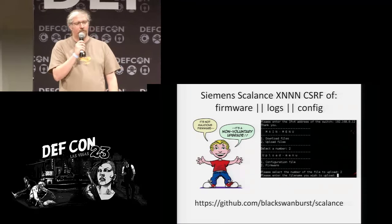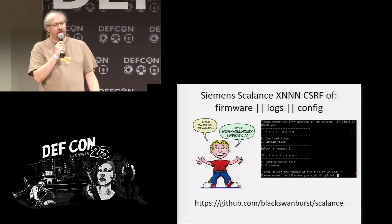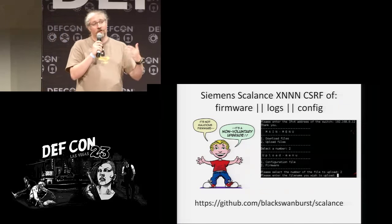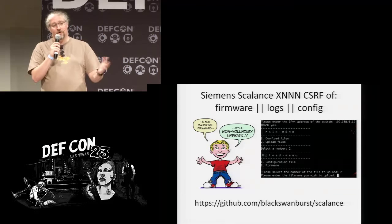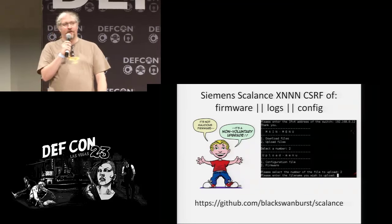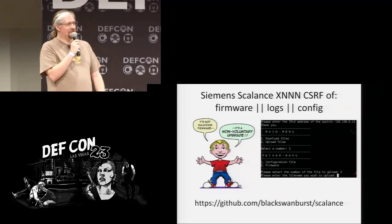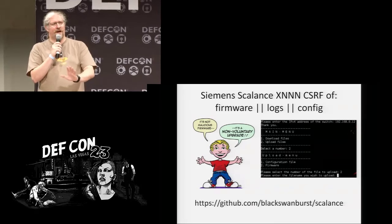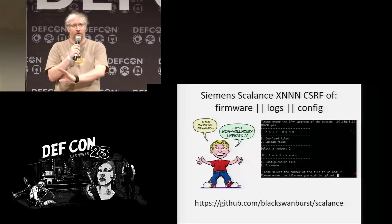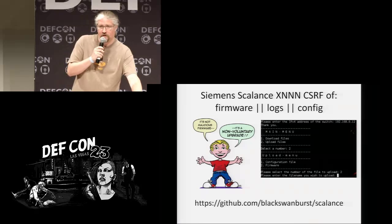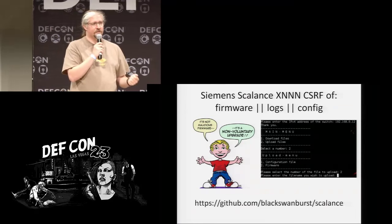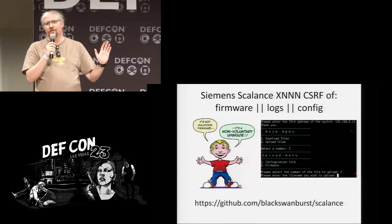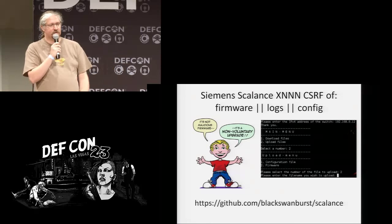We focused on authentication bypass and particularly on firmware. If you go to my GitHub you can pull down this script. Basically it's a CSRF that makes it possible to download a configuration file or log file from the device with a GET, or with a PUT you can upload firmware, configuration, or log files. Amazingly, you can change the log file on a device before you've even broken into it. This creates an authentication bypass: I download the device's current config to get the old passwords, upload my own config with a known password, log in and do whatever I want, then re-upload the old config. No one knows the password was ever changed. You can also just POST a firmware image to the device. Siemens has fixed this in newer versions.